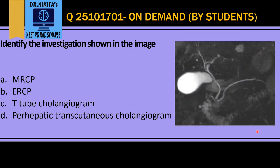This becomes cholangiopancreaticography. Since there is no scope or catheter here, it is MRCP — Magnetic Resonance Cholangiopancreaticography — which is a non-invasive test. So the correct answer here is option A, that is MRCP.